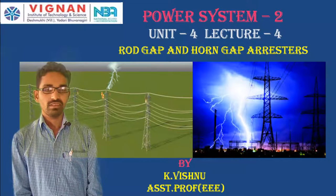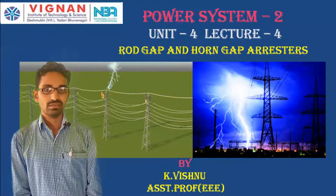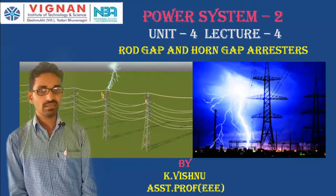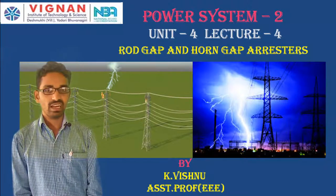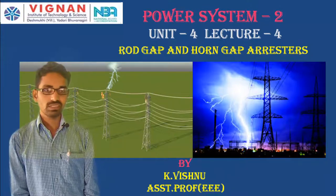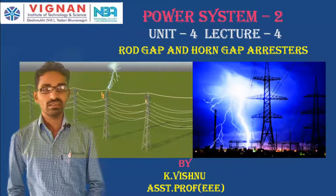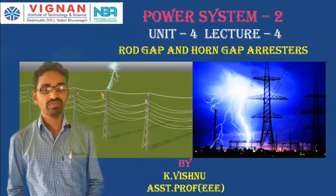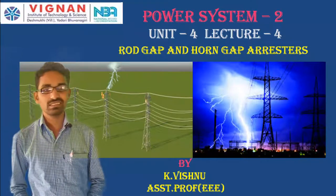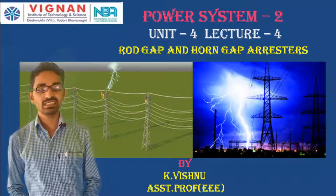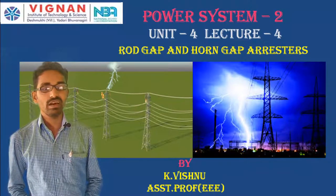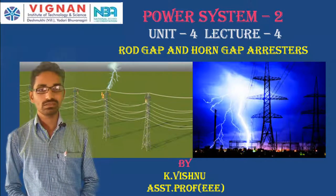Hello everyone. Today we are going to see about the rod gap and horn gap arrestors. In the last class we have seen the protection against lightning strokes — what are the different protection schemes. We have seen overhead ground wires, ground rods, and counterpoise. We also have lightning arrestors and the different types. Today we are going to cover rod gap arrestors and horn gap arrestors.